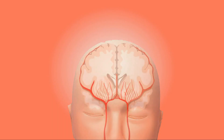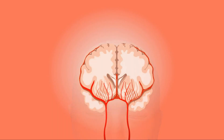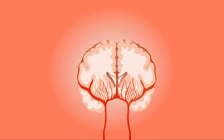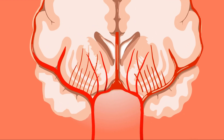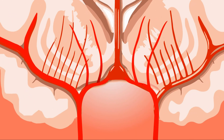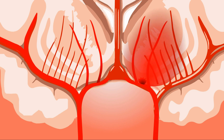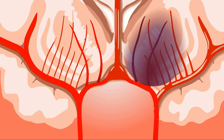Similarly, if blood vessels to the brain are affected, it causes stroke. A milder form of stroke is known as transient ischemic attack, where patients suffer from a sudden loss of power in their limbs temporarily and subsequently regain function.